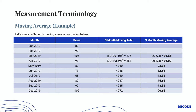So you can see in this example, we've got the different months on one side. In the next column, we've got the sales for each of the individual months. When you add the sales for the first three months, you get 275 — that's the three-month moving total. Then in the next row, we remove the sales for the first month and add the sales for the fourth month, giving a three-month moving total of 288. The last column shows the three-month Moving Average: take the sales for the first three months and divide by three to get 91.66. In the next row, remove the first month's sales, add the fourth month's sales, divide by three, and you get 96.